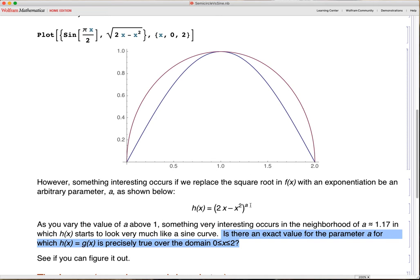over the domain where x ranges from 0 to 2 inclusive? So in other words, is there an exact value of a for which this kind of squashed circle or exponentiated circle becomes equal to the sine curve? See if you can figure that out on your own, and I'll pause for a few seconds before revealing the answer. Go ahead and pause the movie.